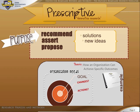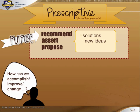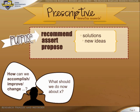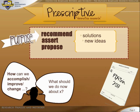The research question in prescriptive research often uses words like can and should — how can we accomplish, improve, or change X, or what should we do now about X. For this reason, you can think of prescriptive research as symbolized by a doctor's prescription pad, writing out the fix for an ailment.